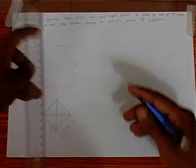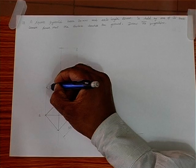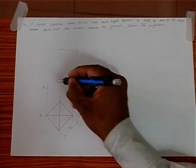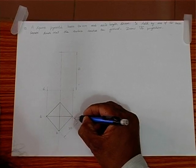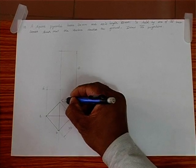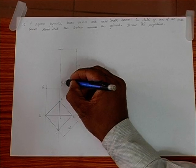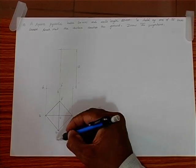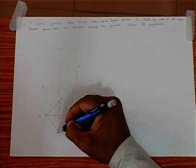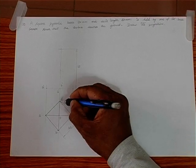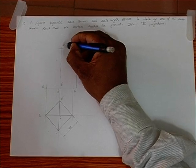Now we can join the points in the front view. This is A dash. Here is B, C, D, and O. So therefore B dash is visible, D dash is invisible — because we see from here B comes first, then D. Therefore B dash visible, D dash invisible, C dash visible. Then we have O dash.